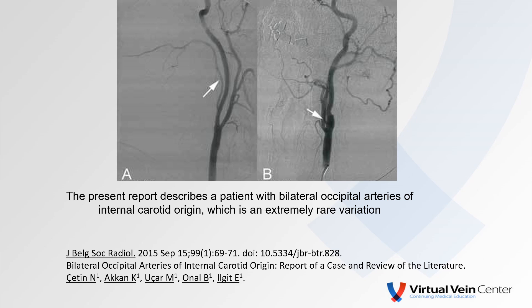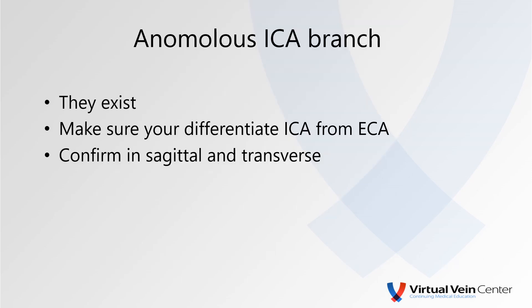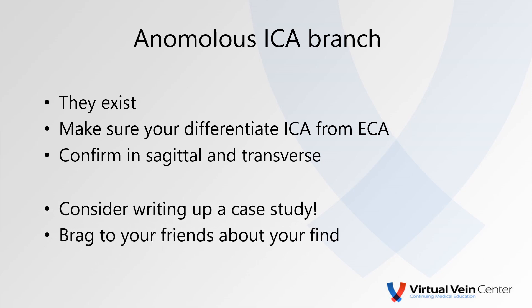I included this reference because it includes angiography — actually a patient with bilateral occipital arteries arising from the internal carotid artery. Image A, the one on the left, actually looks pretty similar to the ultrasound example I showed you. So in fact, anomalous ICA branches do exist and occur. If you come across one, make sure you're confident in differentiating the internal from the external carotid artery, and confirm that branch origin in both sagittal and transverse planes. Then consider writing up a case study and brag to your friends about your fantastic find.